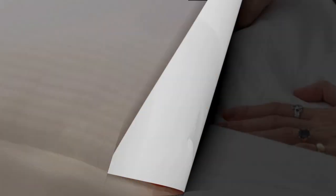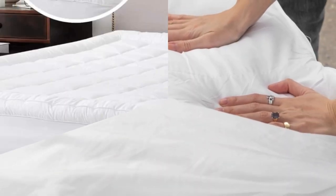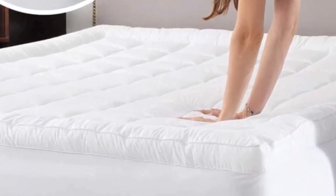The pad is available in seven sizes, including a split-king option where you'll receive two twin XL mattress pads. This is a great option for couples who own adjustable beds.